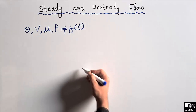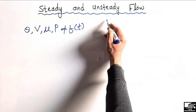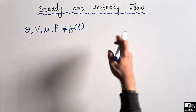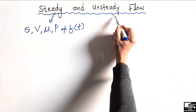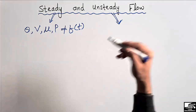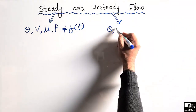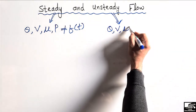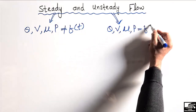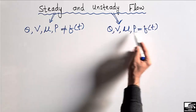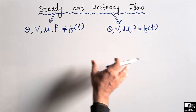They are not a function of time. While in the case of unsteady flow, the properties of the fluid depend on time and change with time. The flow in which the discharge, the velocity, the viscosity, or the pressure of the fluid is changing with respect to time and is dependent on time — we call such type of flow unsteady flow.